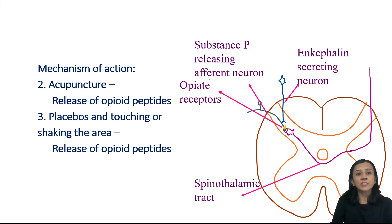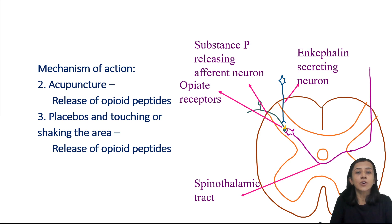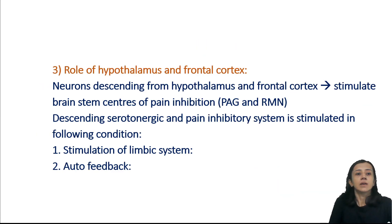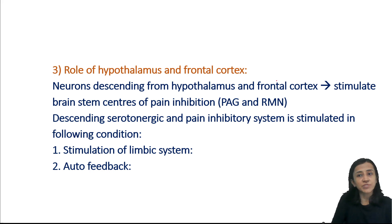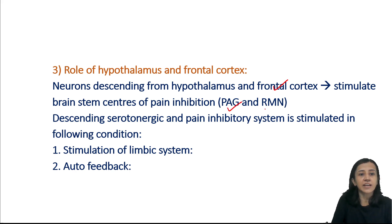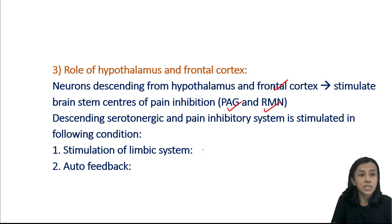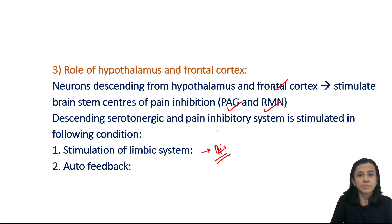Acupuncture reduces pain by release of opioid peptides. Placebo — touching and shaking an area — also releases opioid peptides and causes inhibition of pain. The hypothalamus and frontal cortex play an important role in pain inhibition, as neurons descending from them act on the brainstem's pain inhibitory system (periaqueductal gray area and raphe magnus nucleus). This descending serotonergic pain inhibitory system is stimulated by limbic system activation, explaining why soldiers wounded in battle don't feel pain.